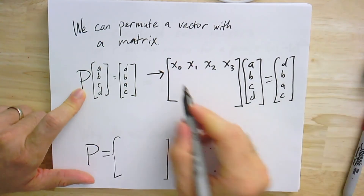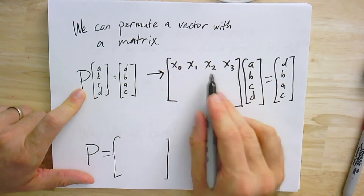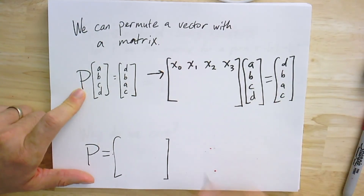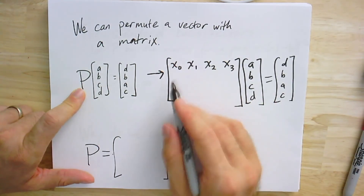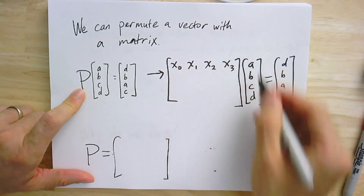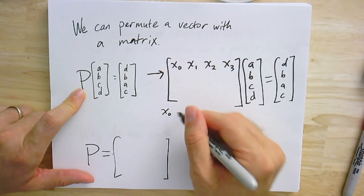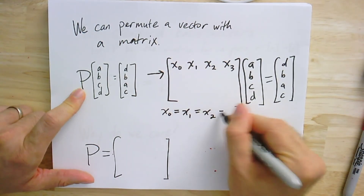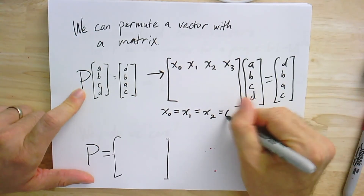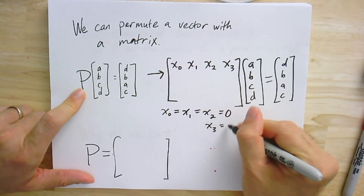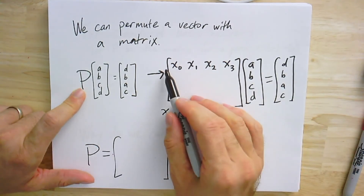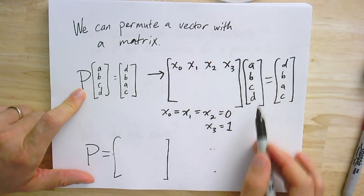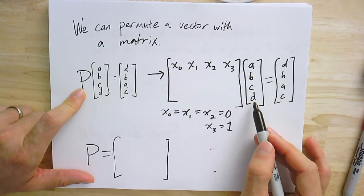All that matters is that x0 times a plus x1 times b plus x2 times c plus x3 times d equals d. A good solution that always works — since we don't know what a, b, c, d are — is to say x0 equals x1 equals x2 equals 0, and x3 equals 1. In a way, this row is just picking out a particular item in this vector; in this case, the last one.